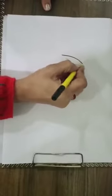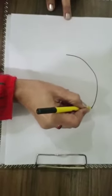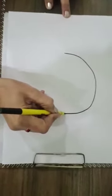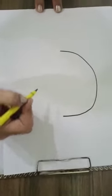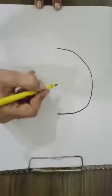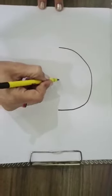Hum next week umbrella banana seekhna hai, okay? So take out your copy, drawing copy, pencils, sketch pen, and colors fast. To draw an umbrella, first of all we will draw a semi-circle. Semi-circle toh hum sab ko draw karna aata hai na, for many things we use semi-circle. Abh is semi-circle ke bilkul center mein aap